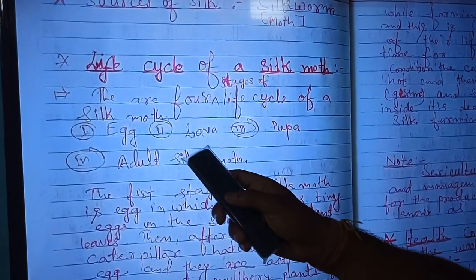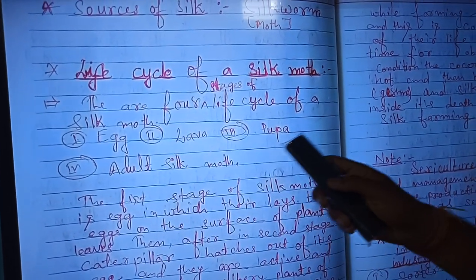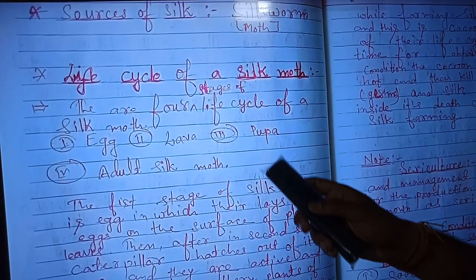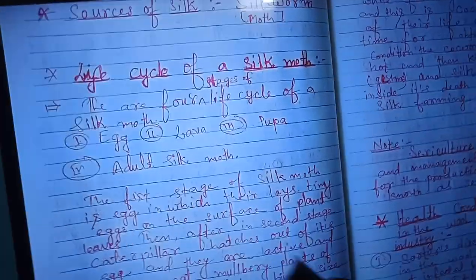The four life stages of the silk moth are: first, egg; second, larva; third, pupa; and fourth, adult.